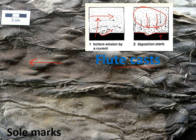So these are a few examples of how we can use things like fossils and sedimentary structures to gain additional information about an environment. In the next part of the exercise, you're going to be applying these to make some inferences yourself.